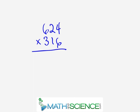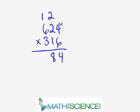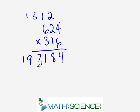Our next problem is 624 times 316. Start in the right-hand column: six times four is 24 — put a four, carry a two. Crisscross: two times six is 12, plus one times four is four — 12 plus four is 16, plus the carried two is 18 — write eight, carry one. Three-way crisscross: six times six is 36, four times three is 12 — 36 plus 12 is 48, plus two is 50, plus one is 51 — write one, carry five. Leading crisscross: two times three is six, plus one times six is six — six plus six is 12, plus five gives 17 — write seven, carry one. Finally, six times three is 18, plus one gives 19. Answer: 197,184.